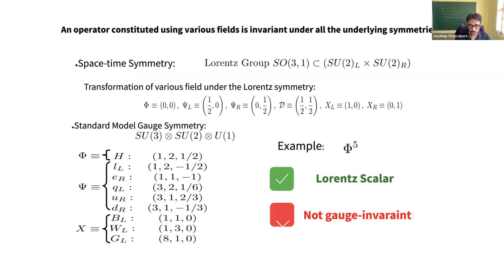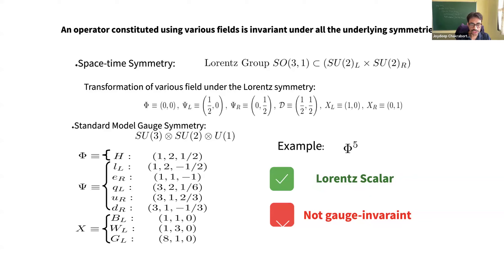For space-time symmetry in 3+1 dimensions, we have the non-compact Lorentz group. We work with SU(2)_L × SU(2)_R representations. A scalar has representation (0,0); left-handed fermion is (1/2, 0) as an SU(2)_L doublet; right-handed fermion is (0, 1/2); covariant derivative is a bi-doublet; left-handed and right-handed field strength tensors are (1,0) and (0,1) respectively.